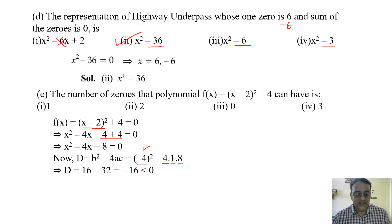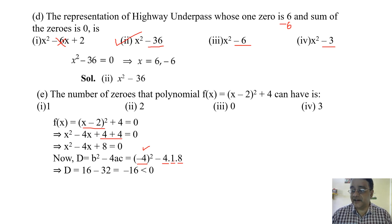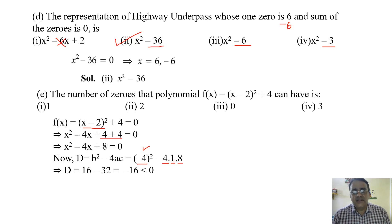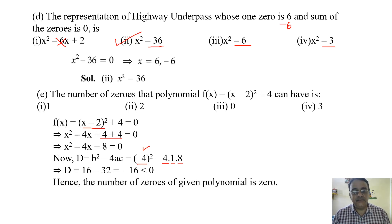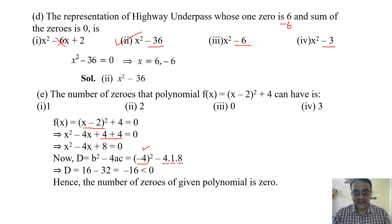Since D is less than zero, there are no real zeros. In class 10, wherever 'zero' is mentioned it refers to real zeros only. Imaginary zeros are not in the syllabus. So the number of zeros of this polynomial is zero.